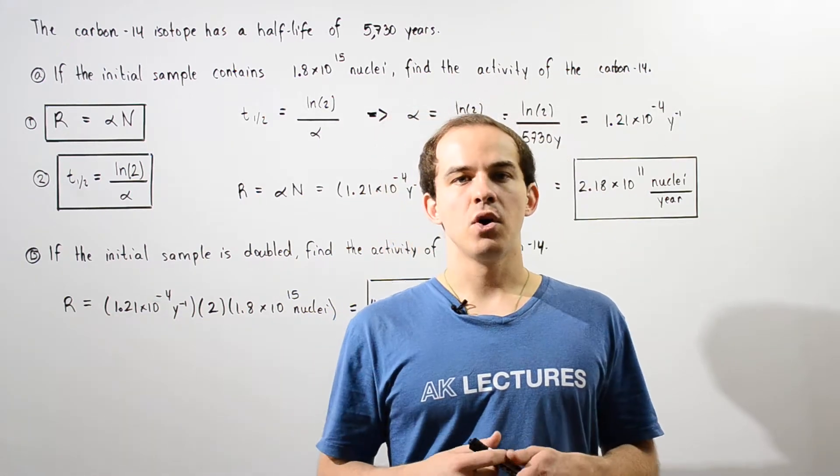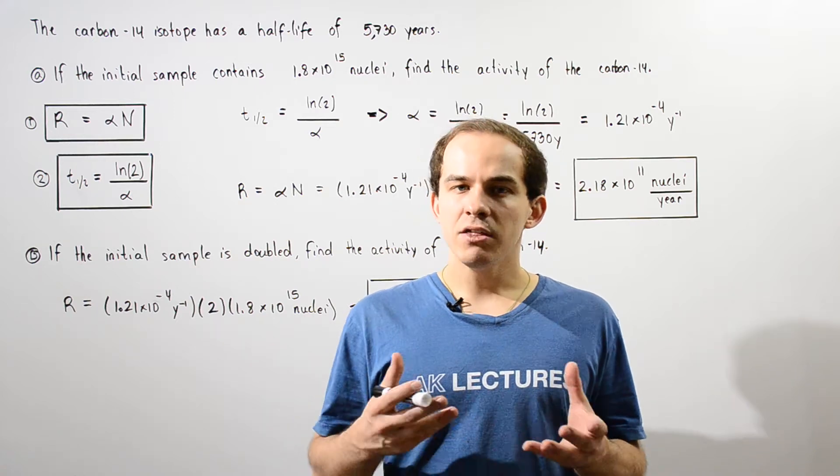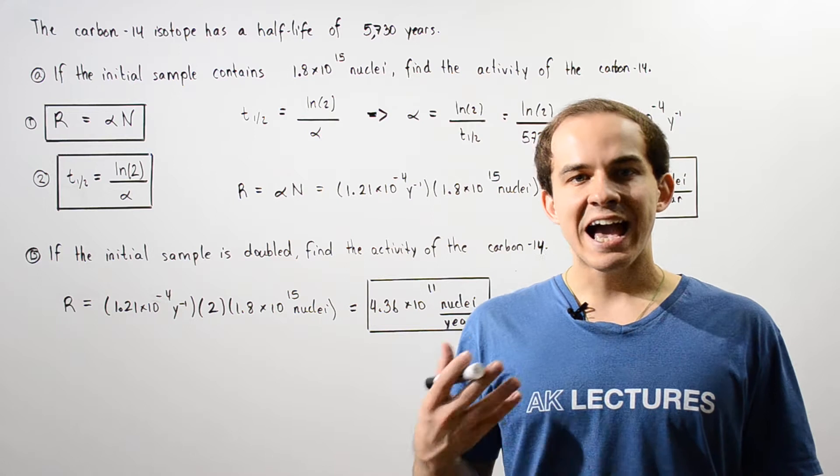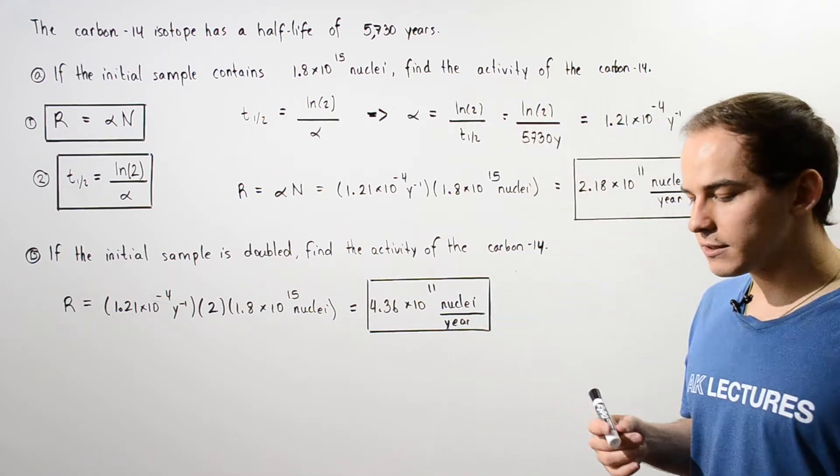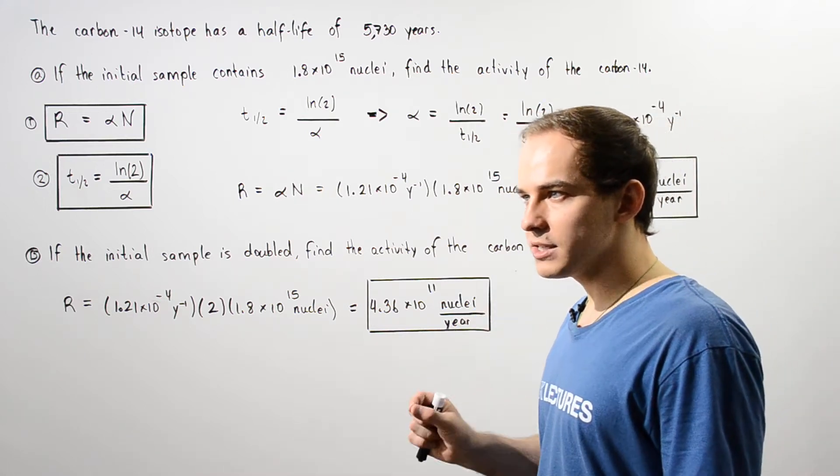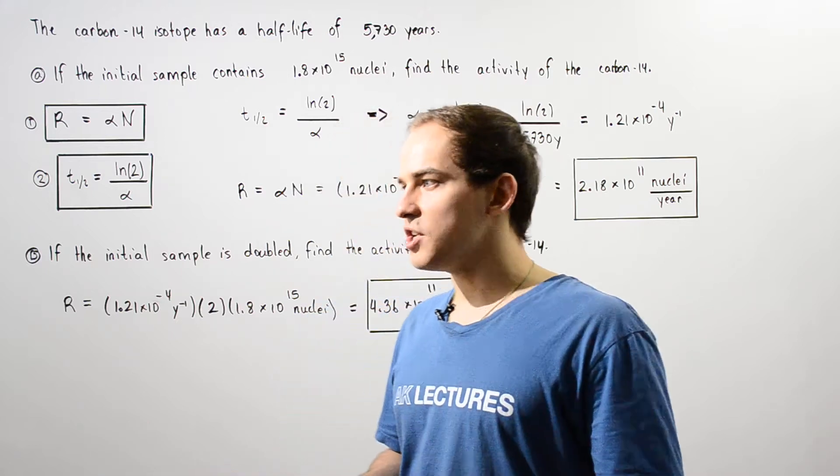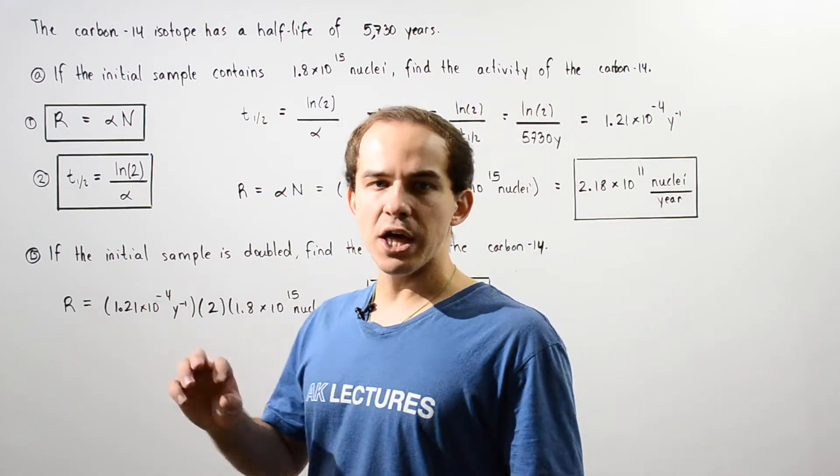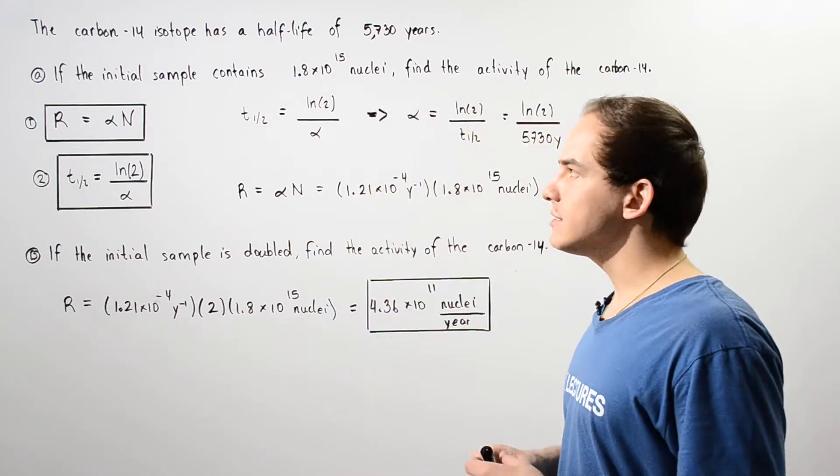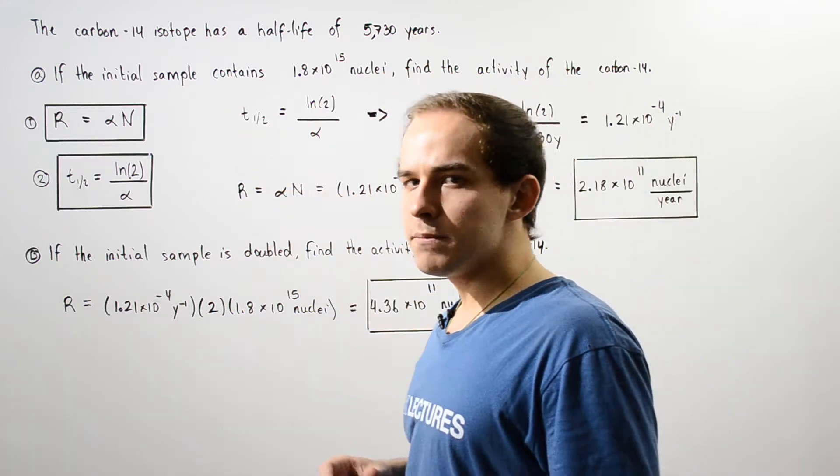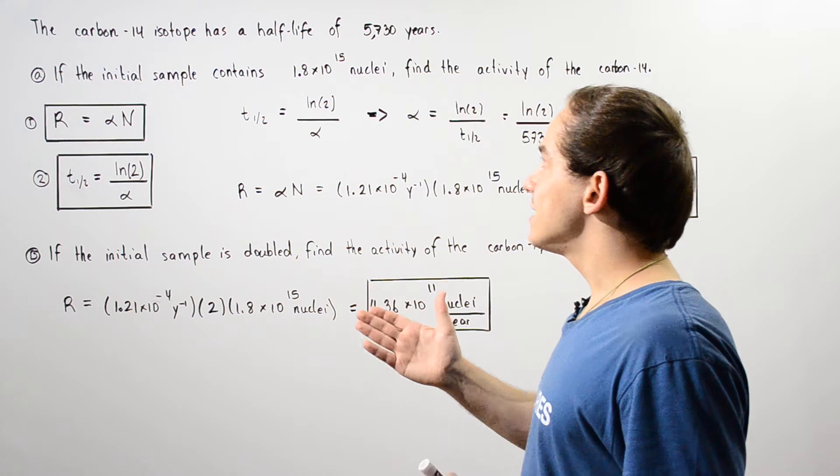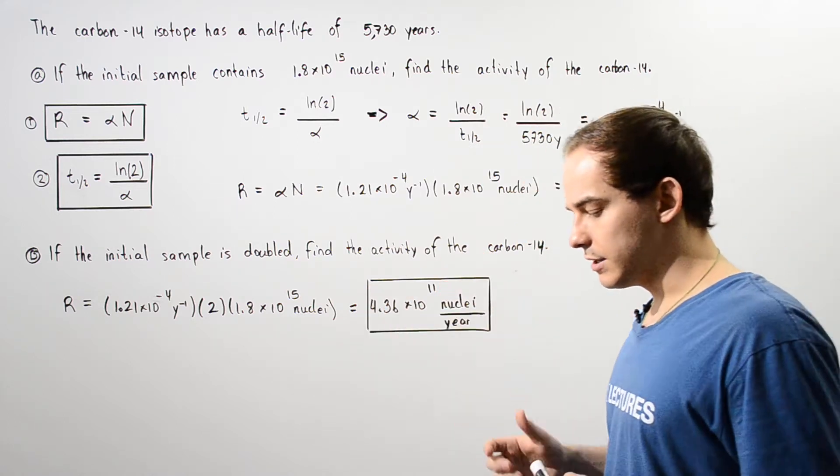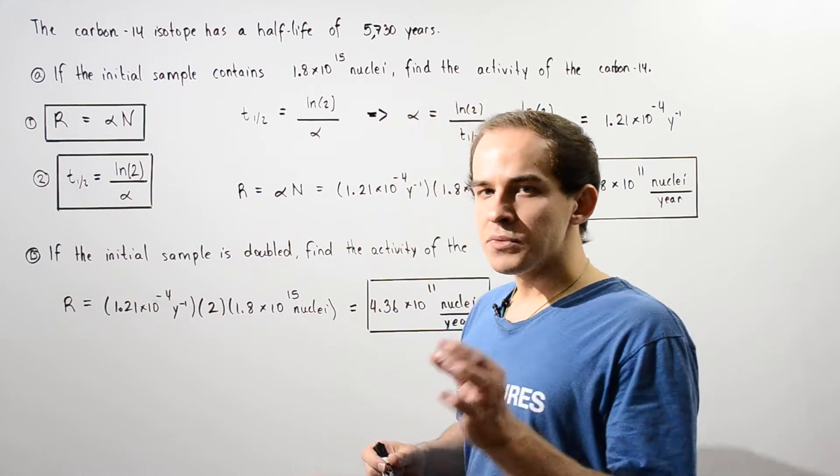Let's take a look at an example dealing with half-life and radioactive activity. The carbon-14 isotope has a half-life of 5730 years.